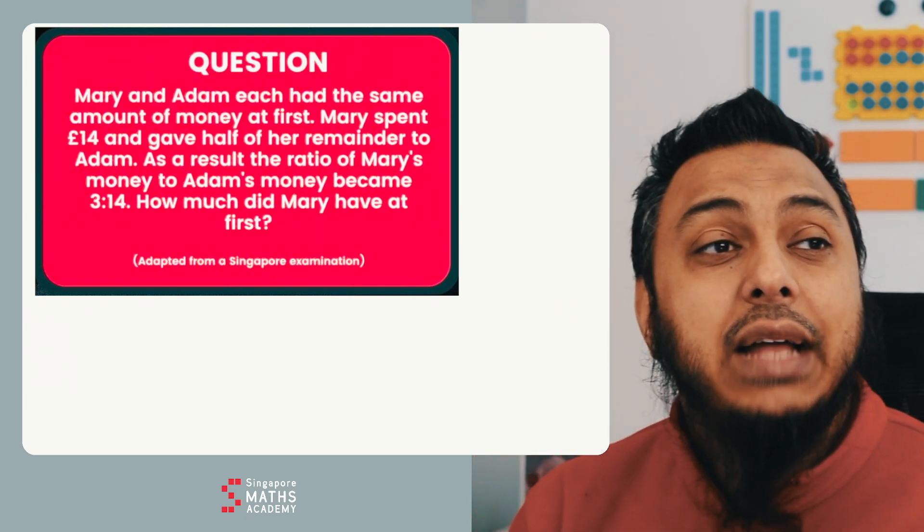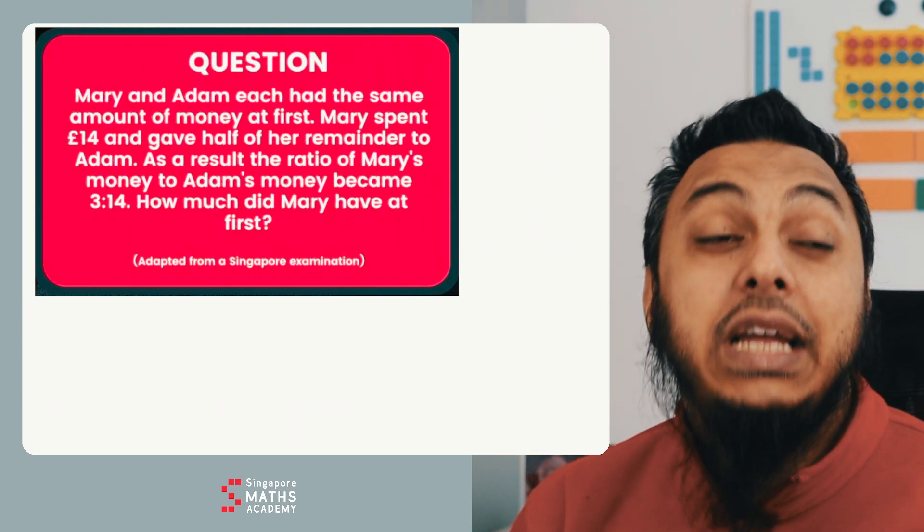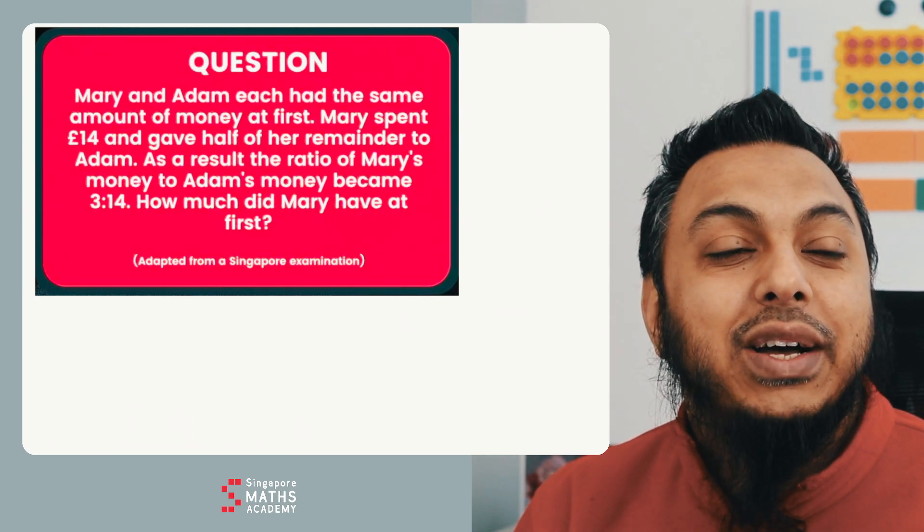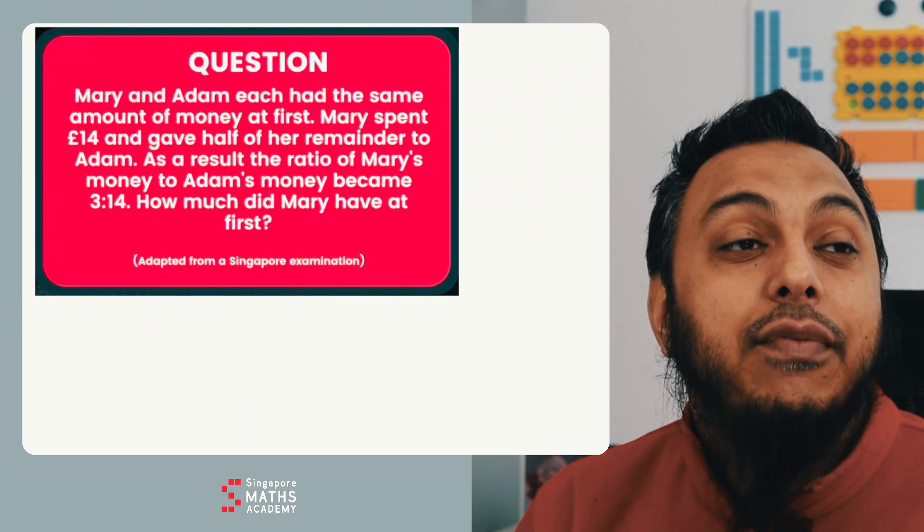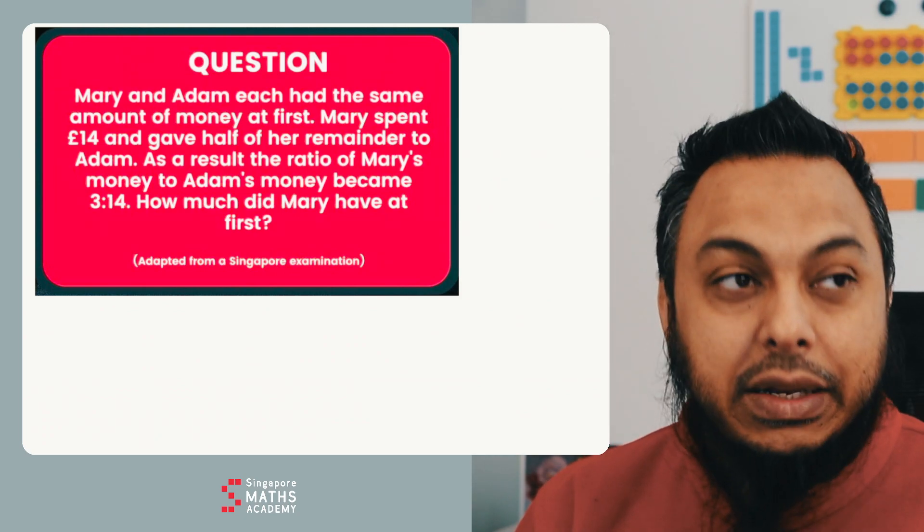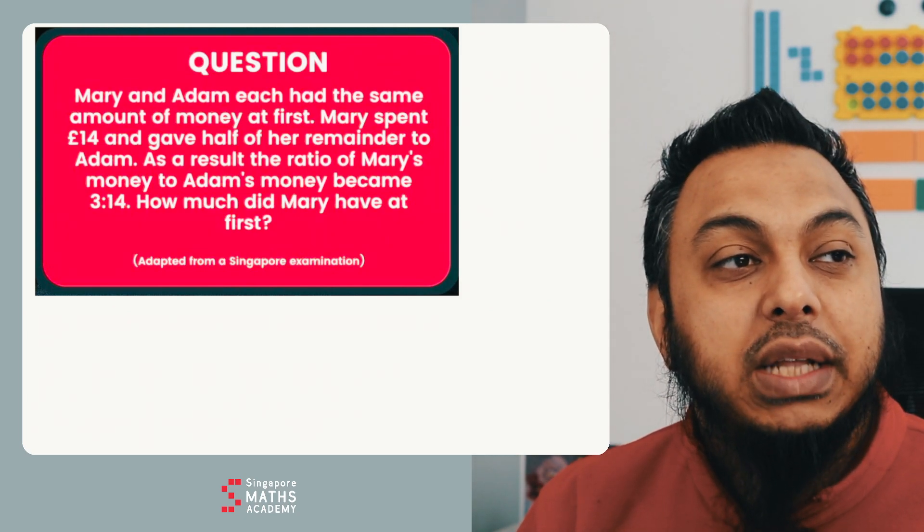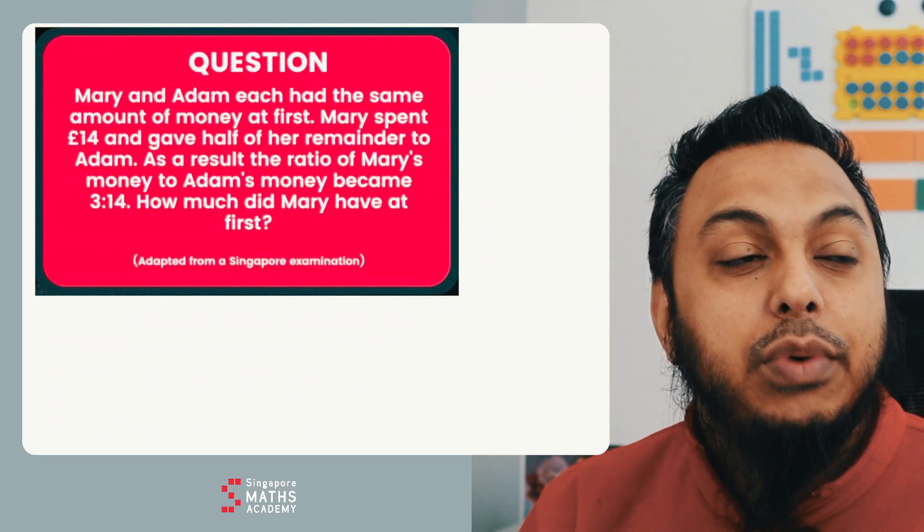The question which is on my screen now says Mary and Adam each had the same amount of money at first. Mary spent £14 and gave half of her remainder to Adam. As a result, the ratio of Mary's money to Adam's money became 3 to 14.